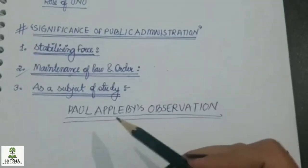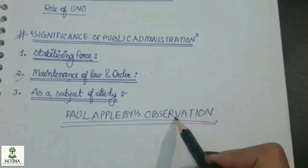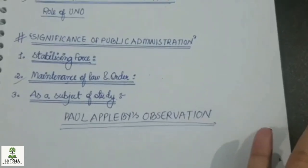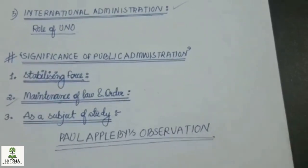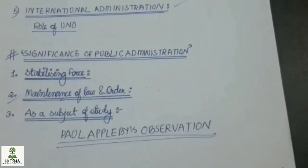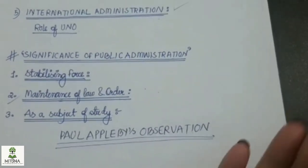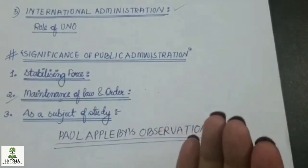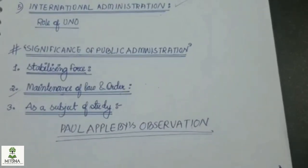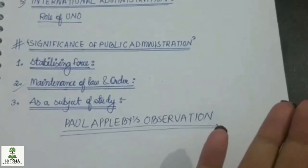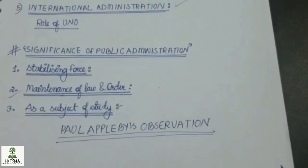We have to look at the observations of public administration, including its policy making. This involves political scientists, students, and administrators. We need to know how to fix responsibility, how to protect the government, and how to make it democratic.